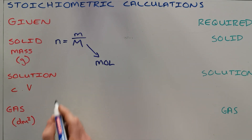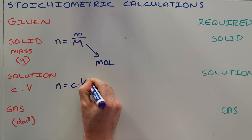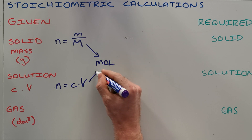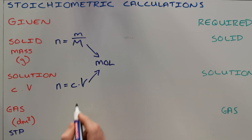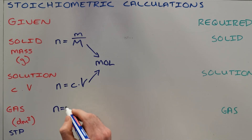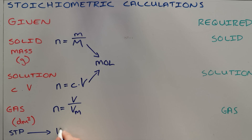If you have been given a solution, you would use the formula: number of moles equals the concentration of that solution multiplied by the volume of that solution. If you have been given a gas, normally this would be given at standard temperature and pressure, in which case your number of moles equals the volume of that gas divided by the molar gas volume, which at STP is equal to 22.4 cubic decimeters.